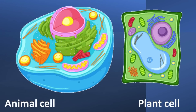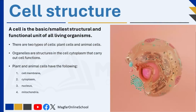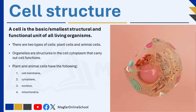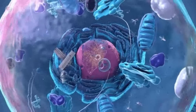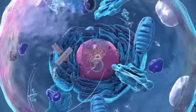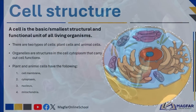Plant and animal cells differ in shape and function, but have certain parts in common. The cells of plants and animals all have a cell membrane, nucleus, cytoplasm, and organelles. Organelles, such as mitochondria and vacuoles, are structures present in the cytoplasm of the cell that carry out cell functions.